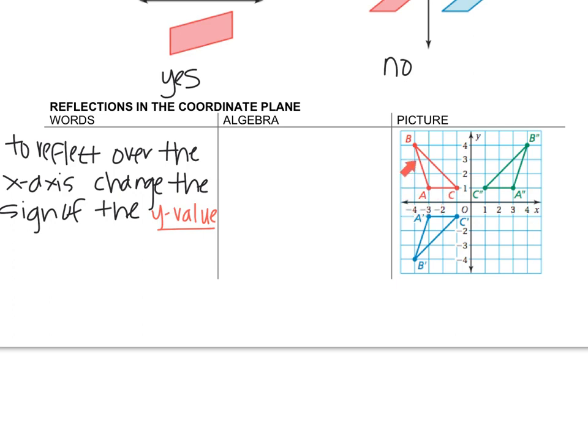You can see B is at negative 4, 4, and its image is at negative 4, negative 4. So all you do is you change the sign of the y value when you're flipping over the x-axis.